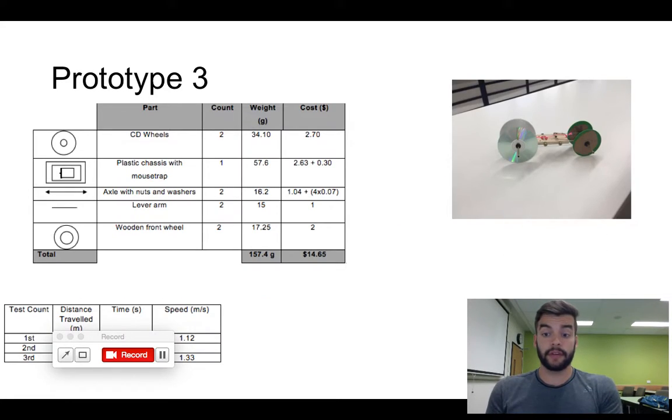And for our last prototype, we actually took the risk to change the design of the car in the last second, right before the race. And we took two wooden wheels and we put them in the front, changing the one wheel design, making it a little bit heavier. So this one is 157.4 grams, but this time it was so much faster because our quickest time, and that was our actual race time, was 3.75 seconds, accomplishing all the objectives of this mousetrap car.